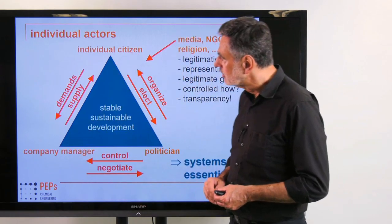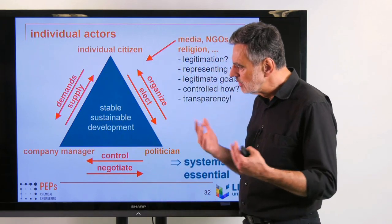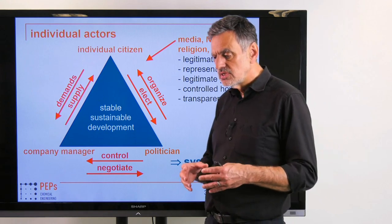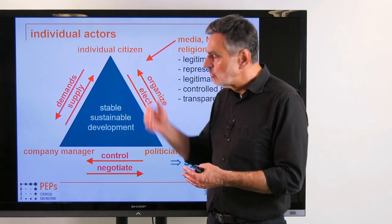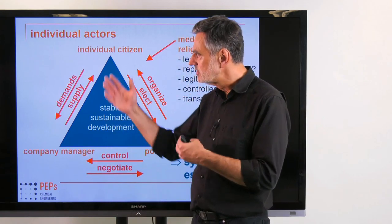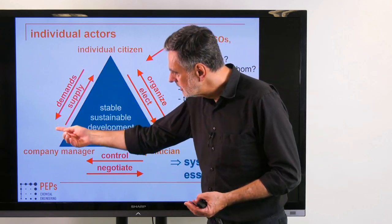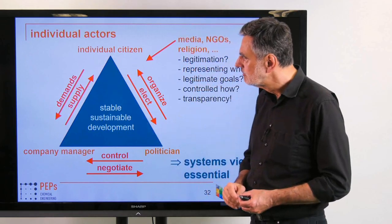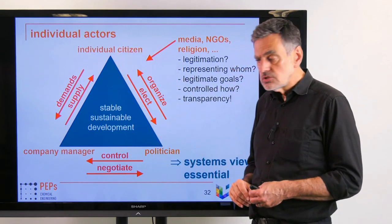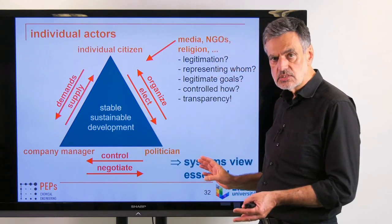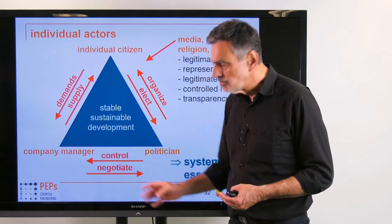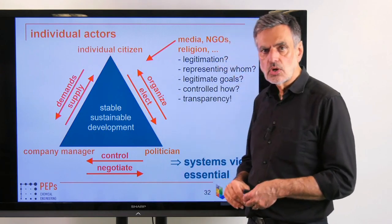One can directly say: these are the main players, and they are in control. Because the individual citizen decides, based on their free will and conscious choices, whom they elect, what they accept for political measures, and what they buy from companies. It's not the other way around — it's the individuals who elect the politicians, not the reverse.